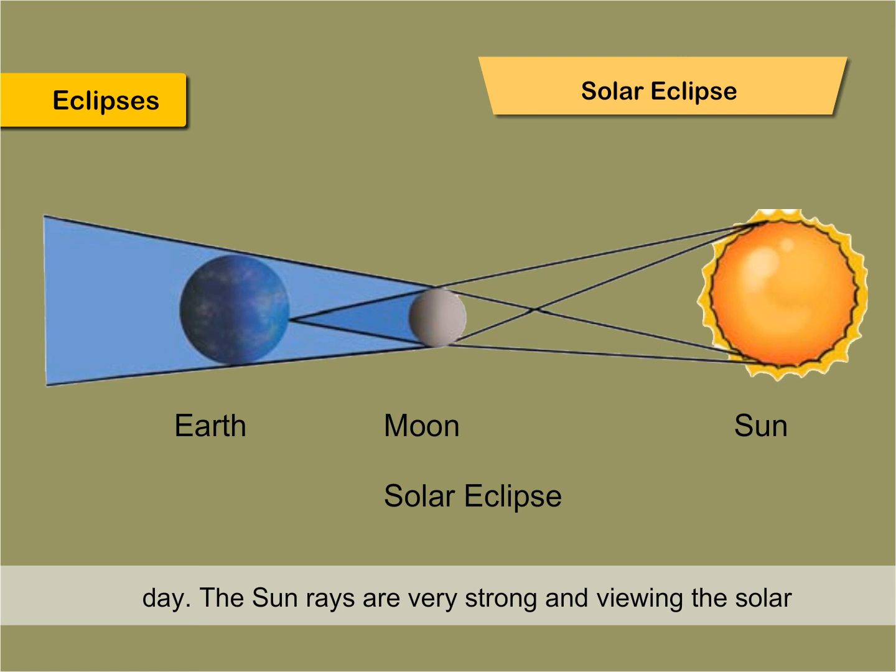The sun rays are very strong, and viewing the solar eclipse directly can damage our eyes. Solar eclipse is also of two types: Total solar eclipse and partial solar eclipse.